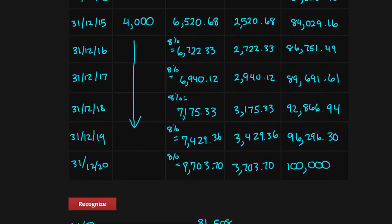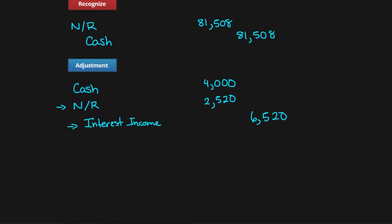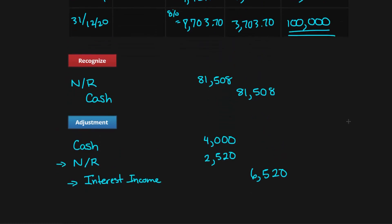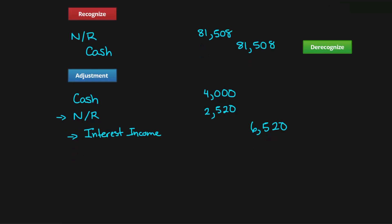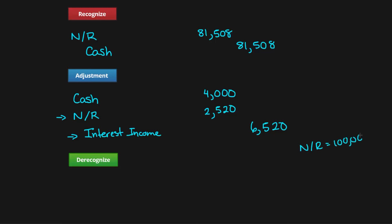At the end, after all of the adjustments and the carrying value is now at $100,000, we can finally de-recognize this note and get it off our books. The note receivable is on our balance sheet at $100,000, so we credit Note Receivable for $100,000 and debit Cash for $100,000 as the principal is returned to us. There you have it — amortization schedule, theory, journal entries — done.